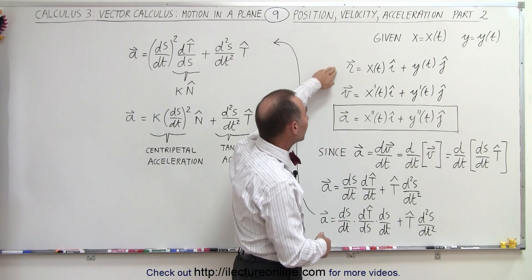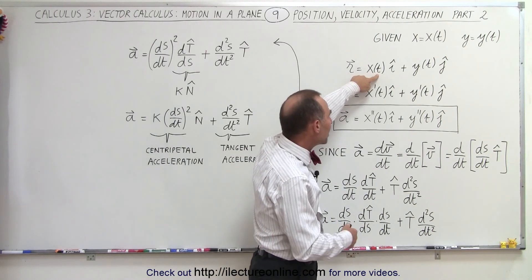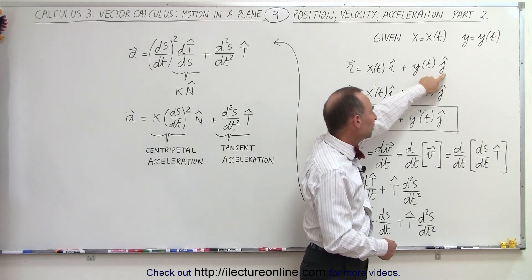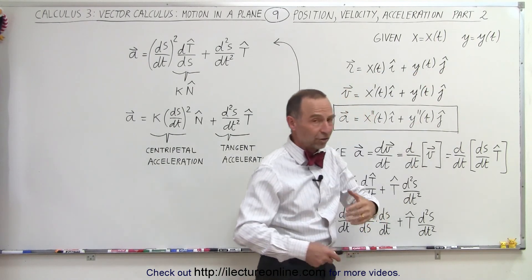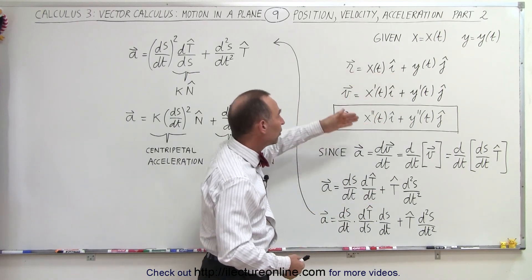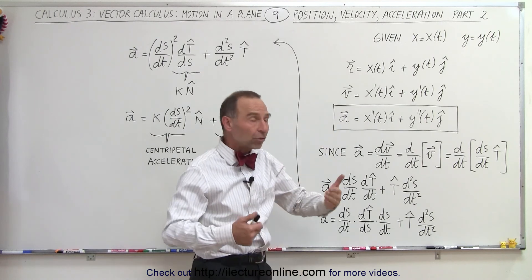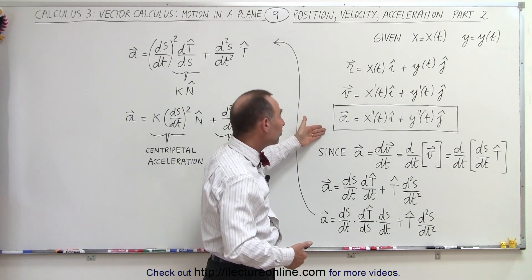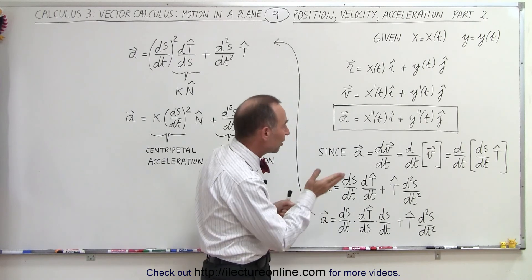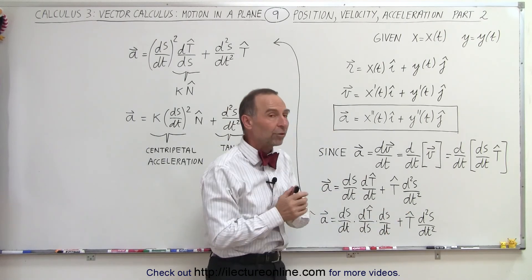So if we start with the position vector, we have a function that depends on the parametric variable t in the i direction plus a function that depends on the parametric variable t in the j direction — the x and the y direction. We take the derivative of each of these components and now we get the velocity vector. We take a second derivative and now we get the acceleration vector, expressed in terms of the acceleration in the x direction plus the acceleration in the y direction.